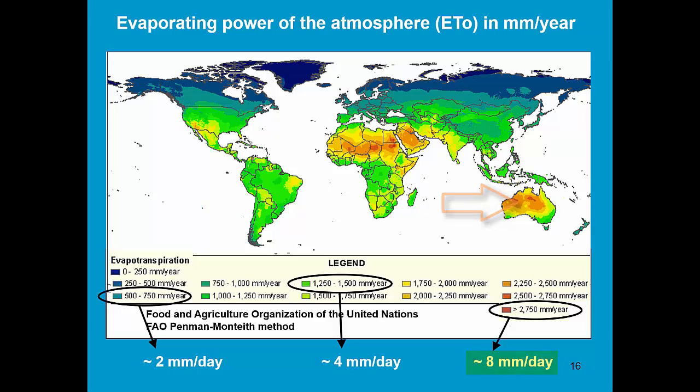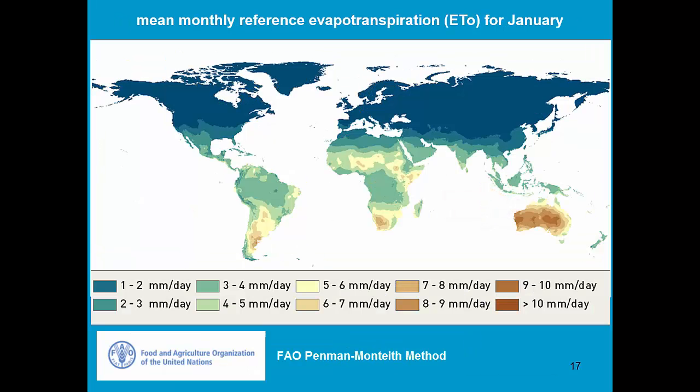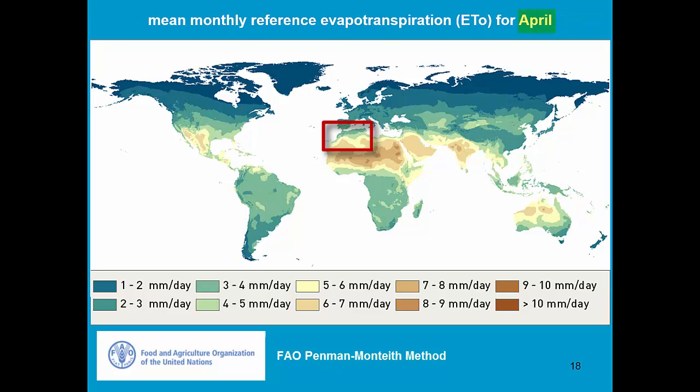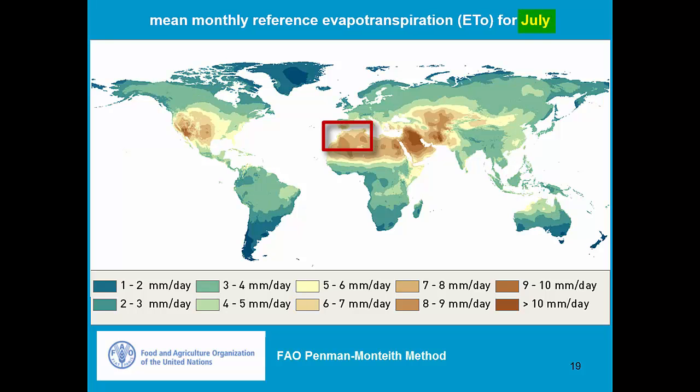Of course, it changes throughout the year. In January, in North Africa, the evapotranspiration is about 1 to 3 mm. In April, it becomes about 3 to 4 mm. And in July, it is already 6 to 8 mm.